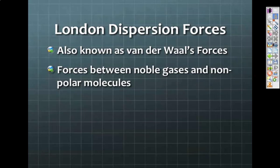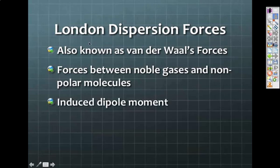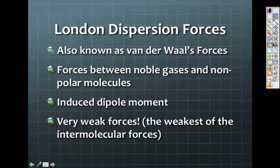If we think about those gas discharge tubes, like a neon gas tube, how can those neon molecules be held near to one another when there's no polarity? That's because the noble gases and nonpolar molecules have an induced dipole moment. For a very brief moment in time, the electrons will start to shift from one part around the atom to another part, giving it a partial positive in one area and a partial negative in the other. This is a very weak force, the weakest of our intermolecular forces.